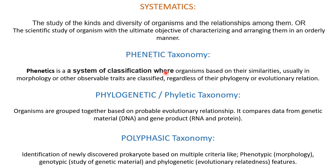Then comes phenetic taxonomy, phylogenetic — which is also termed as phyletic taxonomy — and polyphasic. Phenetic is a system of classification where organisms are classified based on their similarities, mostly using morphology or other observable traits, regardless of their phylogeny or evolutionary relationship. So in phenetic taxonomy you classify organisms depending on external characteristics and you don't go for genetic study or evolutionary relatedness.